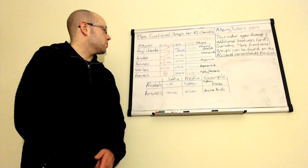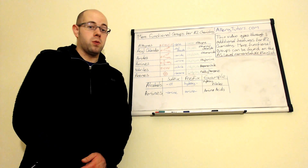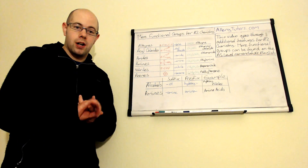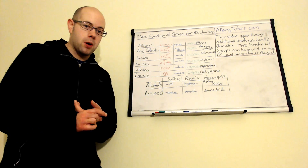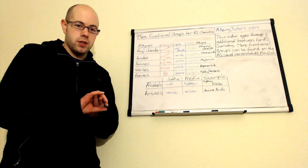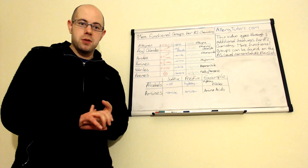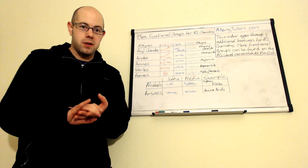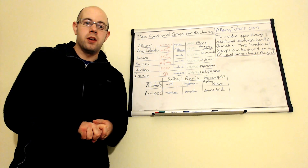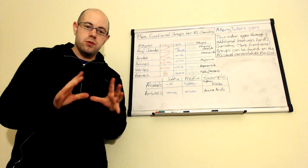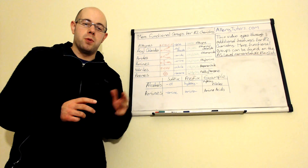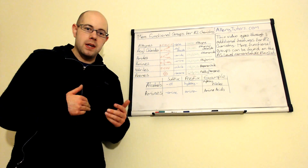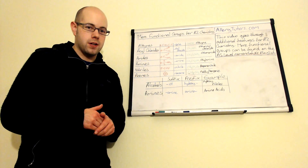We're going to go through the additional functional groups here — what they look like in terms of the molecule, the nomenclature in terms of how they should be named, and a quick example for each one. There are also a few exceptions from AS where you have to know where they might be named slightly differently in A2.